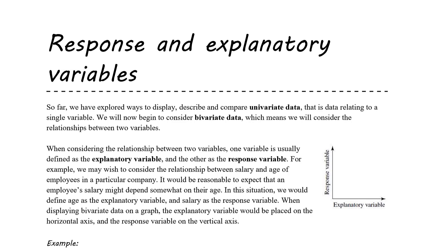When we display bivariate data on a graph, the explanatory variable would always be placed on the horizontal axis — that's the same as the independent variable — and the response variable would be placed on the vertical axis, which is the dependent variable. So the explanatory variable is x and the response variable is y.